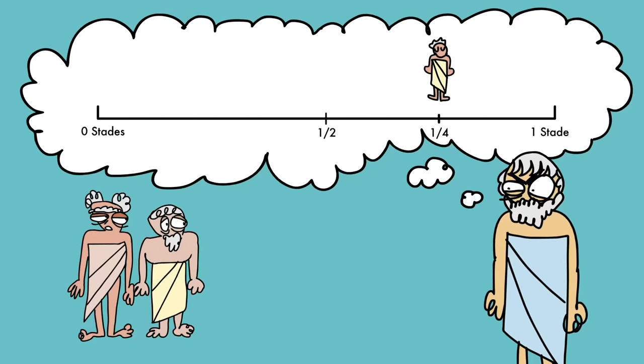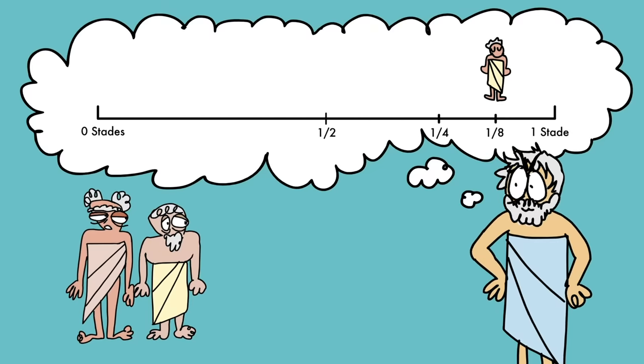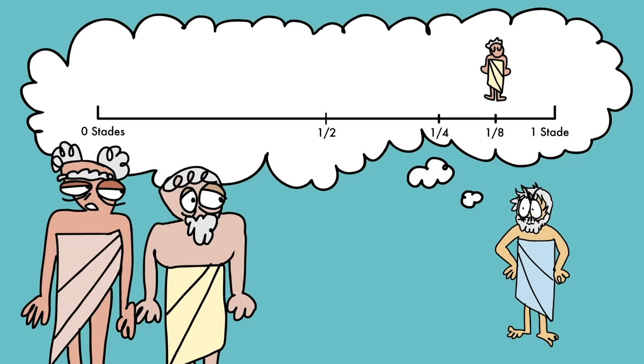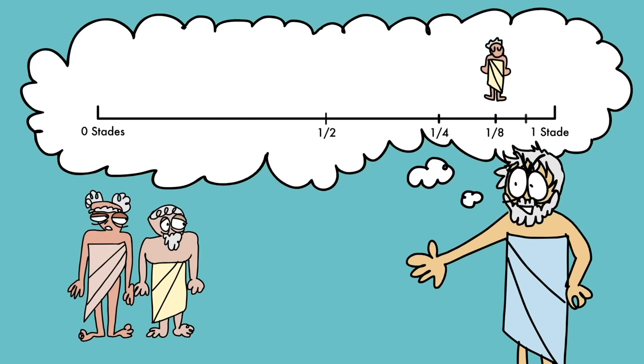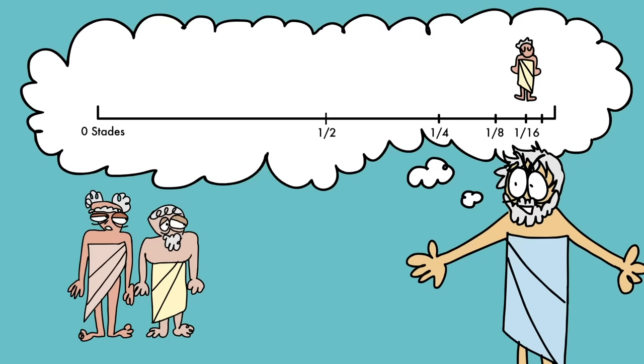But once you're there, there's another halfway point for you to reach, now an eighth of a stade in front of you. Where are you going with this, Zeno? But then halfway again is a sixteenth of a stade, and so on. Once you reach that halfway point, there'll be another one in front of you, no matter how far you go. Before you can reach your final endpoint, you must first reach the infinitely many half points that come before it. How do you manage that?